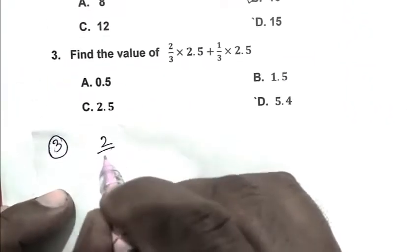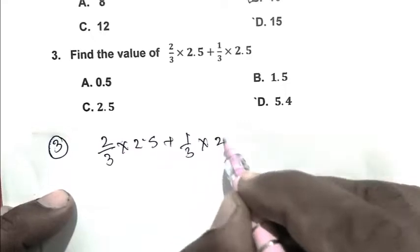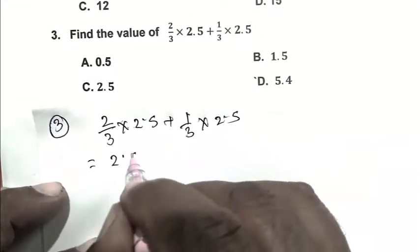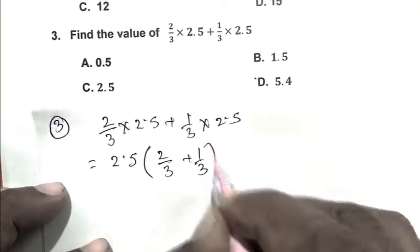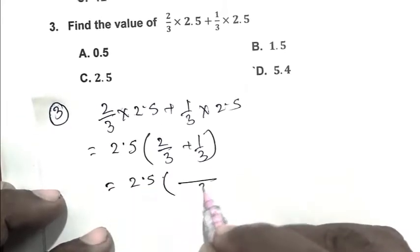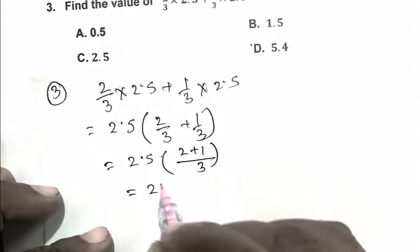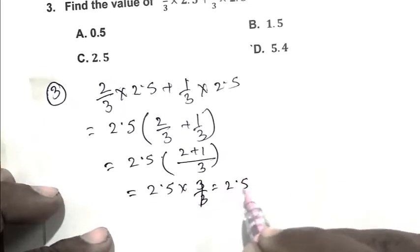Question number 3. Two-thirds multiplied by 2.5 plus one-third multiplied by 2.5. Here we take 2.5 as a common factor. So it becomes 2.5 multiplied by the bracket (two-thirds plus one-third). That is 2.5 multiplied by (2 plus 1) over 3, which gives 2.5 multiplied by 1, that is 2.5. So C is the right answer.